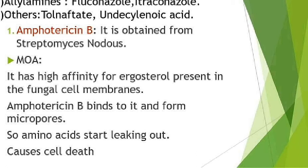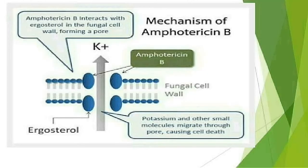Amphotericin B comes under polyene antibiotics. It is obtained from Streptomyces nodosus. As the name itself indicates, 'amphotericin' means it is amphoteric in nature. Now let us study its mode of action. The fungal cell membrane is made up of a main component called ergosterol.